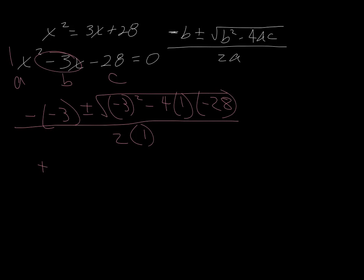So let's go ahead and simplify this a little. Plus or minus the square root of 9 minus 4 times negative 28. So that's going to change to a plus. So that would be 112, and that's all going to be over 2.